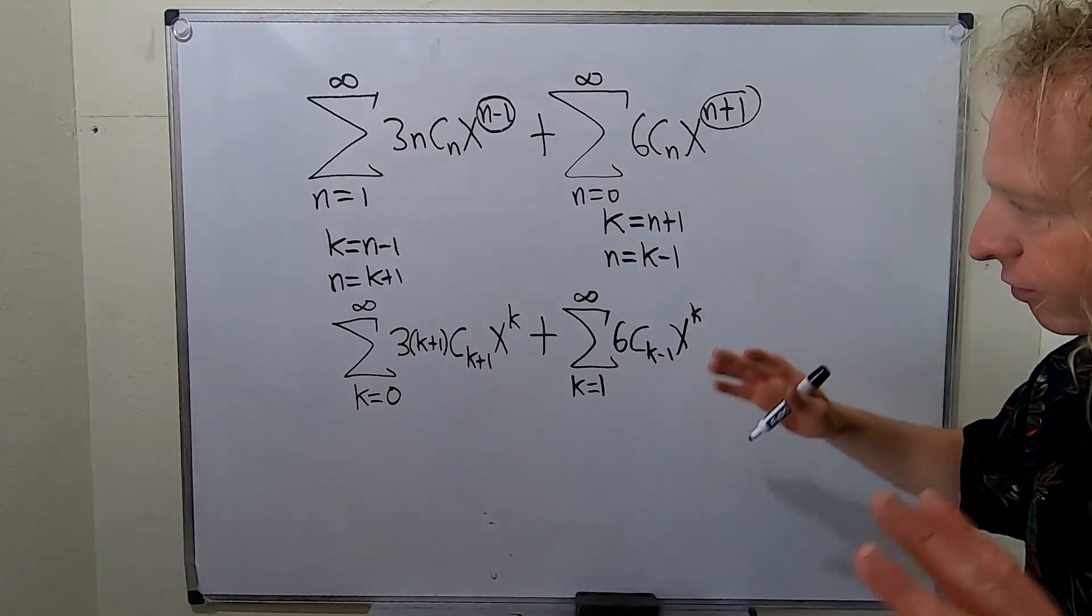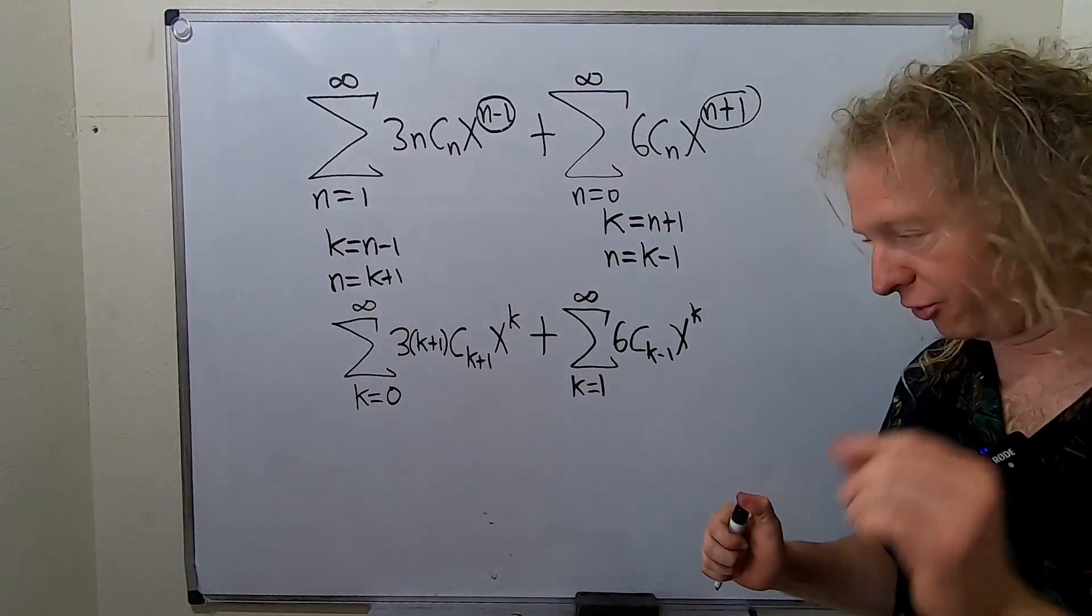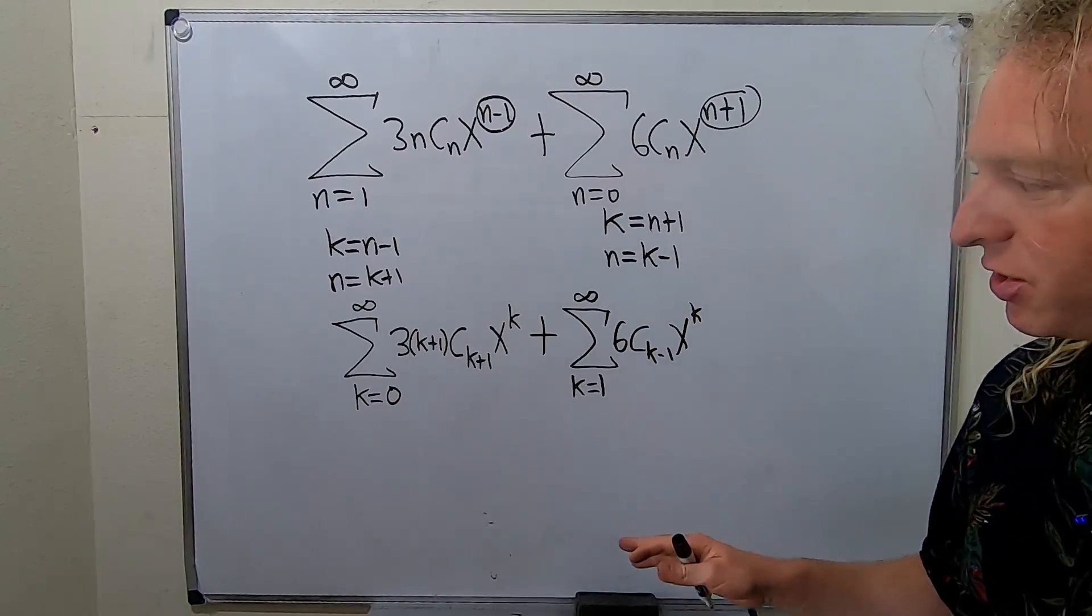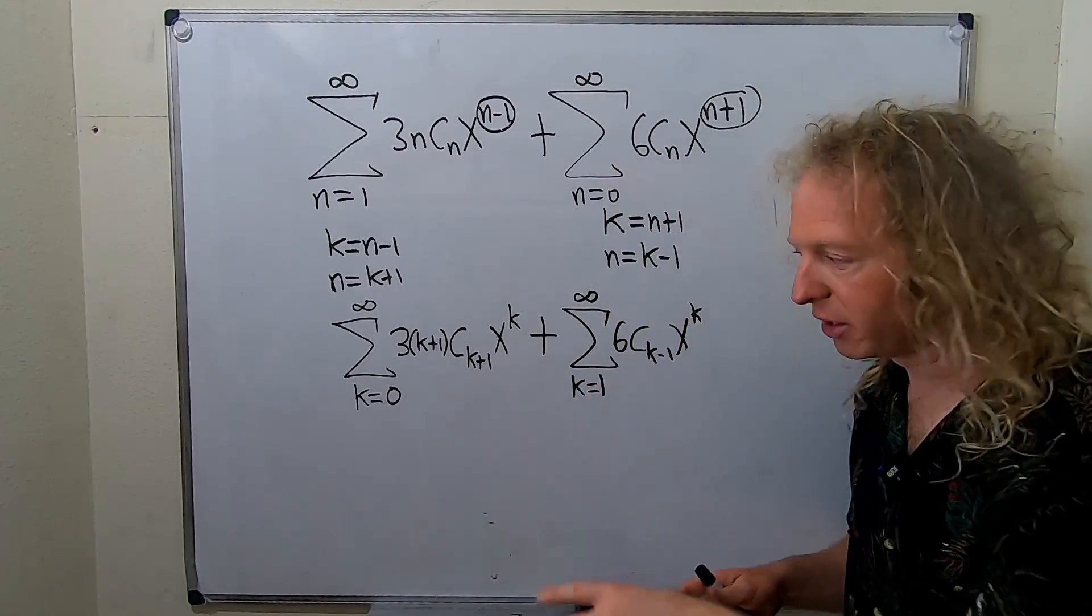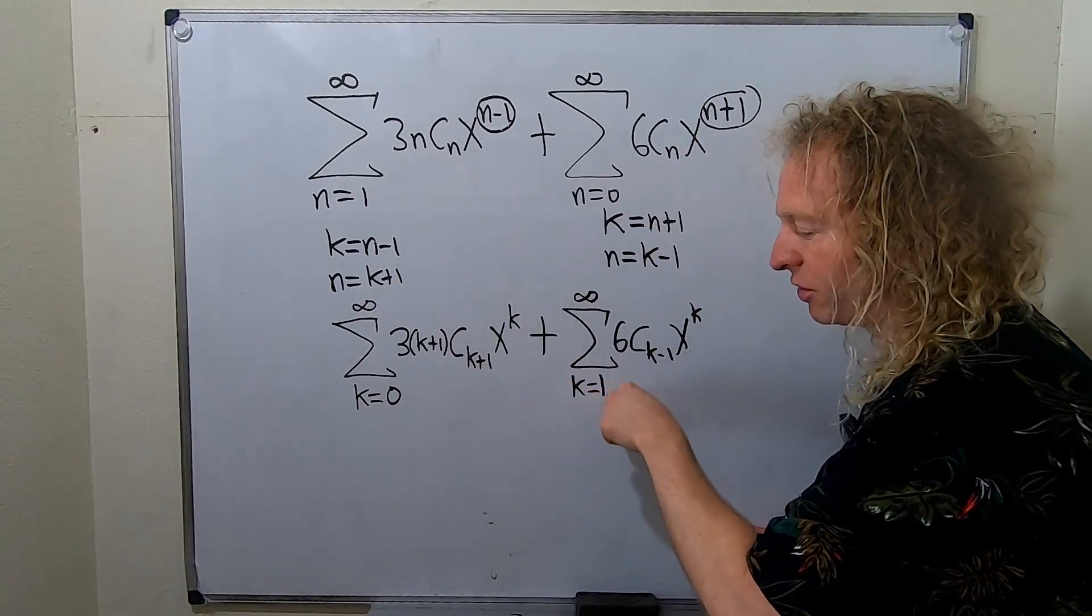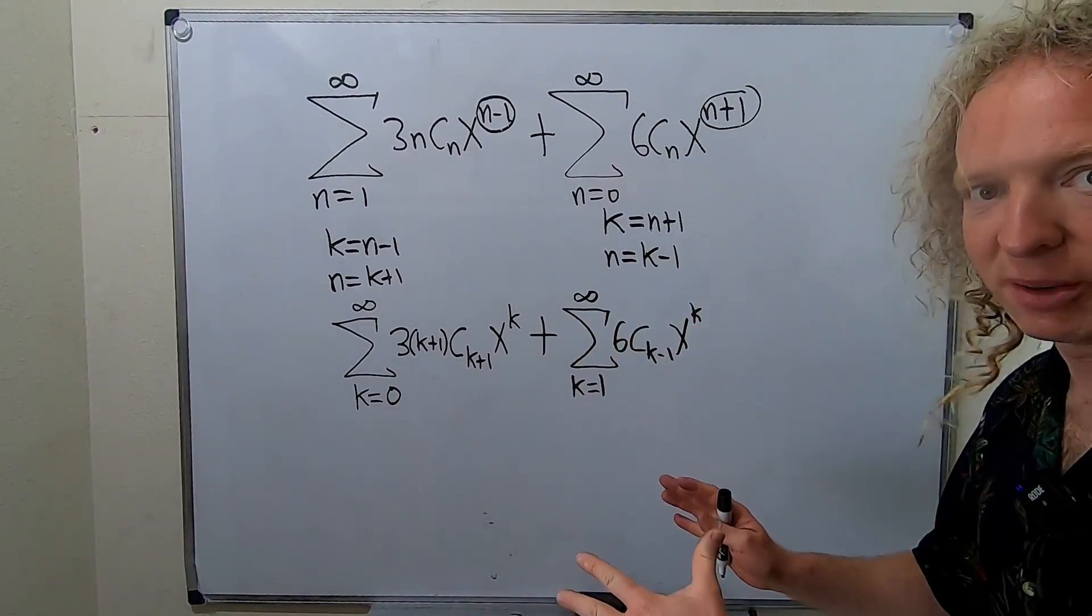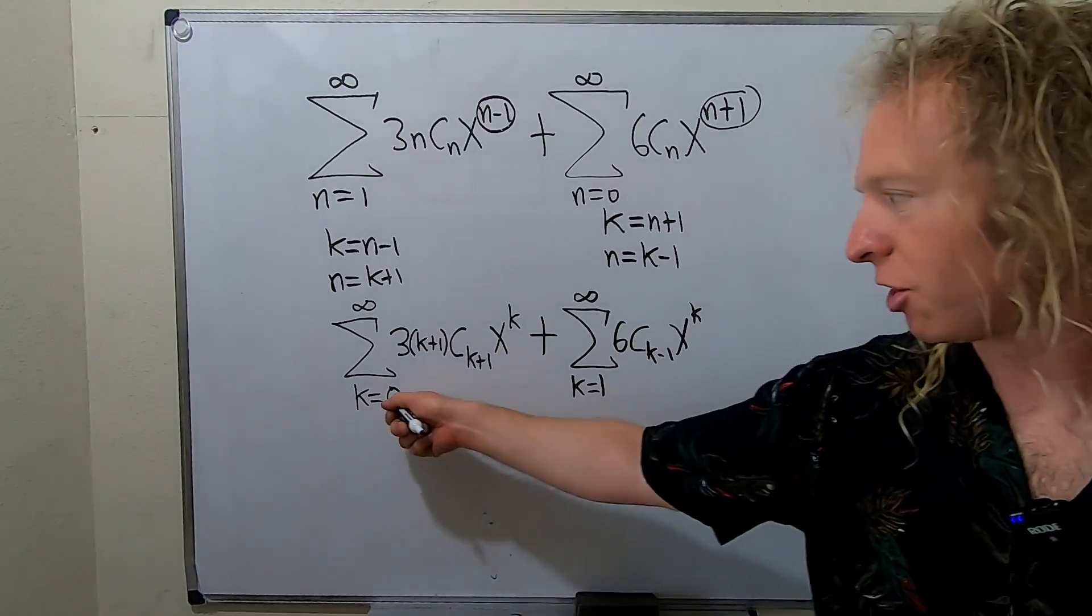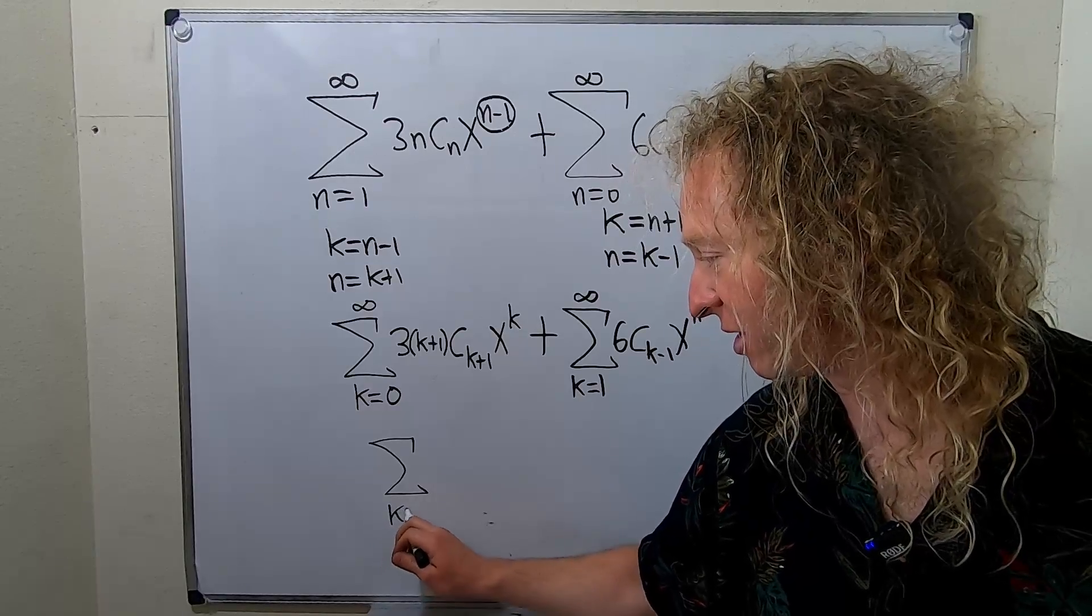This next step is a little bit tricky. We want to write this as a single sum. So you always want the easy way to do it. There's a bunch of ways to do it. But the easiest way in my view is to start at the highest one. So we have 0 and we have 1. So we want them to start at 1. You want both sums to start at 1. So here's what you do. You start this at 1. You might say what? You can't do that. Yes we can. We will make it right.